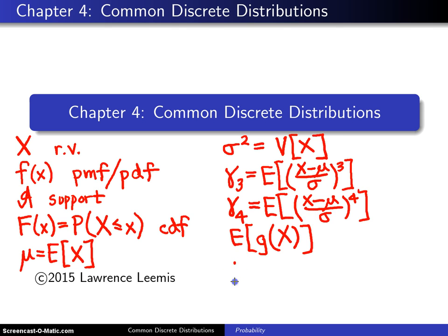There is one expected value which comes up quite often, and it is described by M of t, which is the expected value of e raised to the t times the random variable capital X. That has a special name. It is known as the moment generating function. We ended chapter three with a number of inequalities. That is a quick summary of some of the notation and concepts presented in the last chapter.